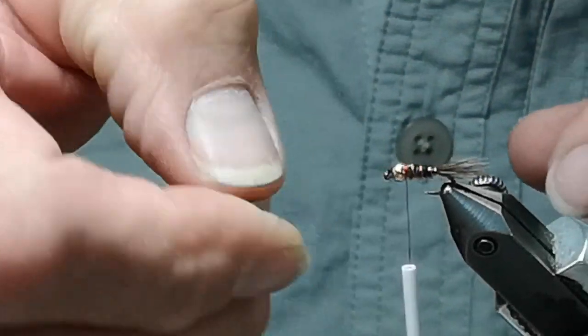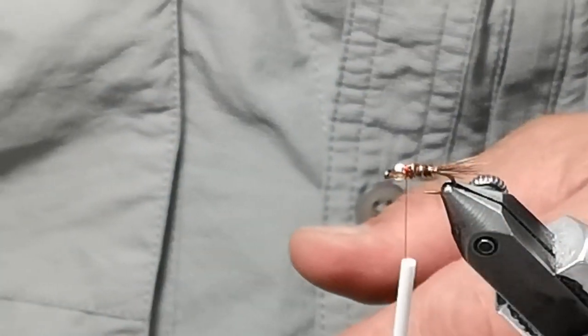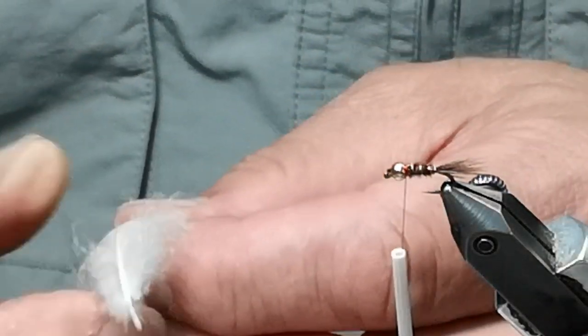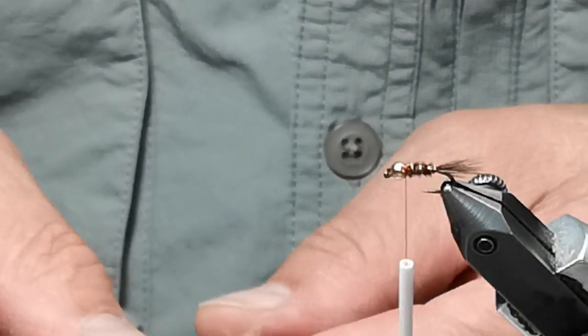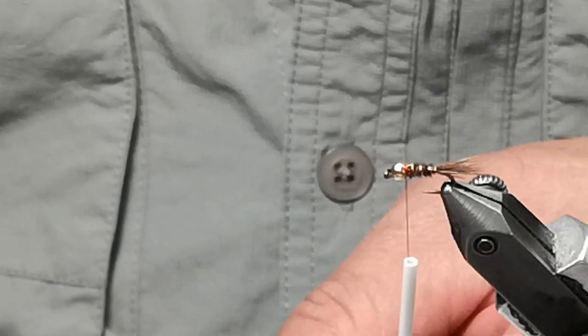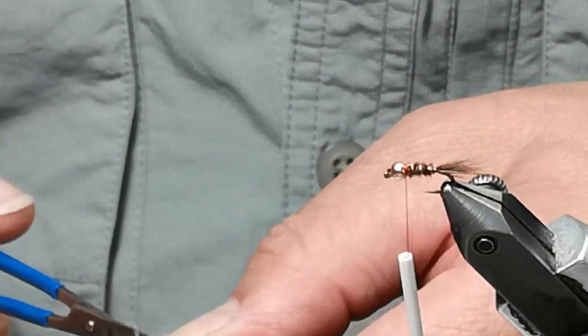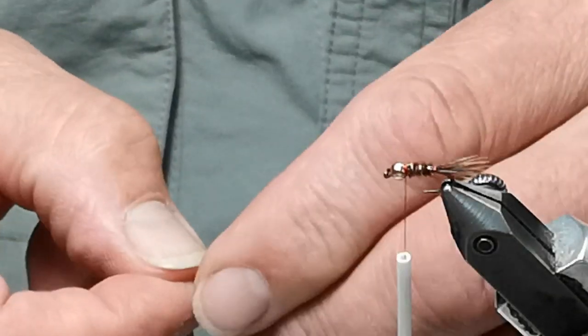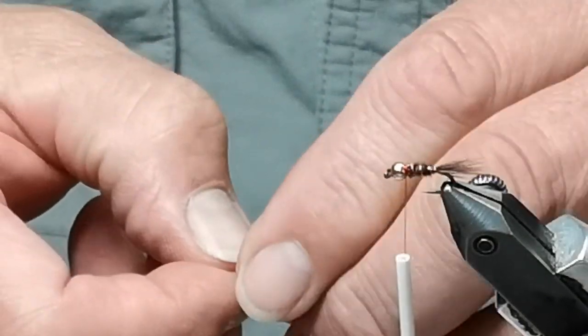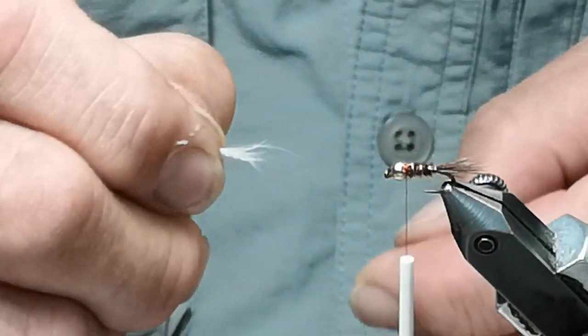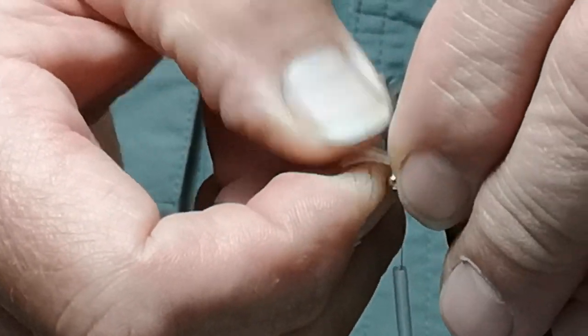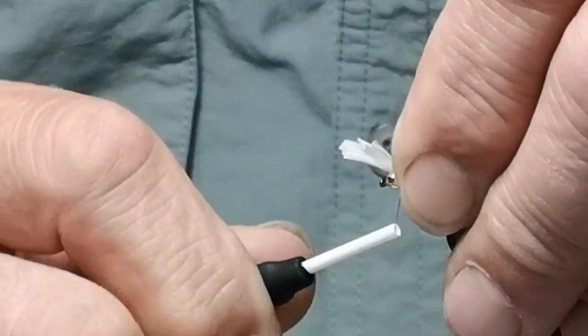Now, this fly is called the JJ Special, and the last thing that I add to it is a little tuft of mallard flank or mallard breast feather. It's this little white tuft on top of the fly, and this is almost a must.